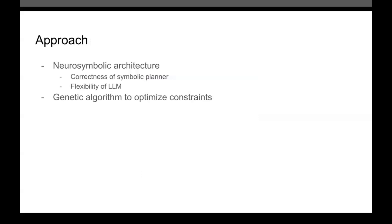The approach we came up with is a neurosymbolic architecture which uses a genetic algorithm to optimize constraints. What makes this unique is that instead of having the LLM generate an entire PDDL problem, which can then be solved by a planner, which involves regenerating the goal constraints each time,